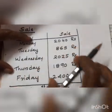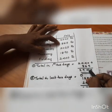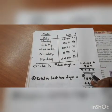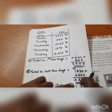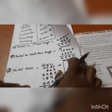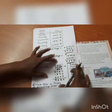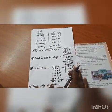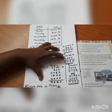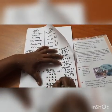Here, Day and Sale. Total in the first 2 days: 2040 plus 865, that is 2905. Total in the last 2 days: 1890 plus 2400, that is 4290. The total sale can be found in 2 different ways. First, add all 5 numbers according to their place values to get the total. We get 9220.